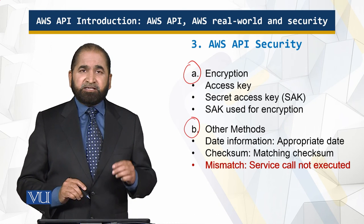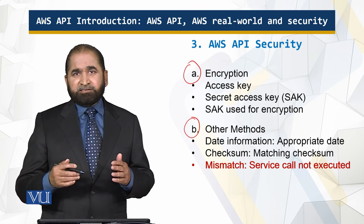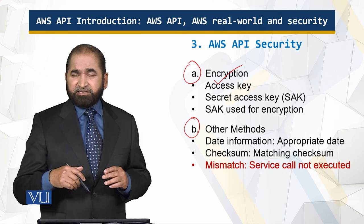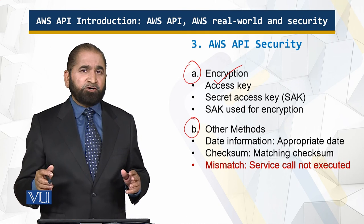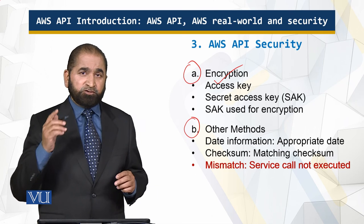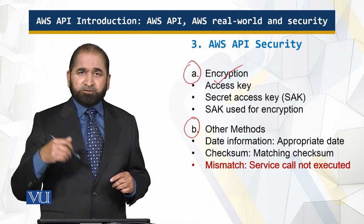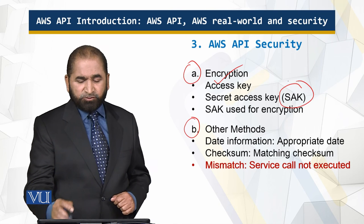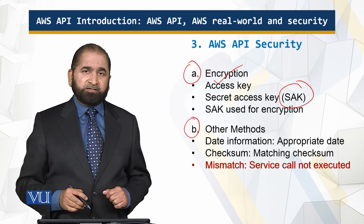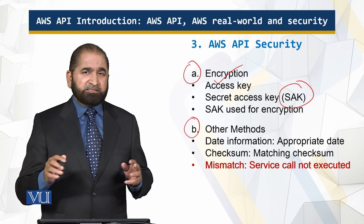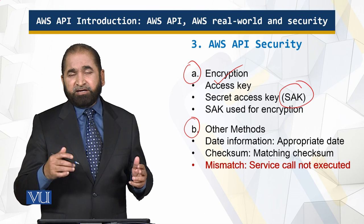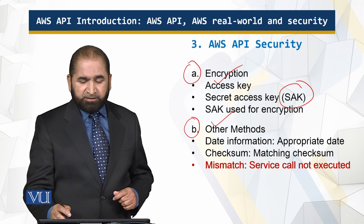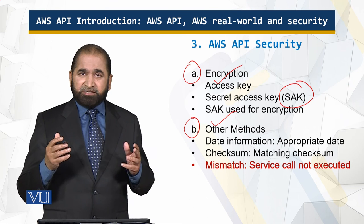For encryption, there is an access key and a secret access key. The secret access key is a random sequence of alphanumeric characters held by both you and Amazon. You keep it safely, and using this key you encrypt the data so that it appears as garbage to anyone who does not have access to those keys.